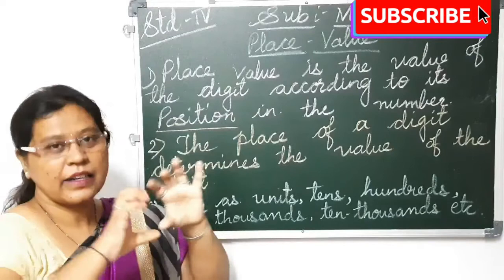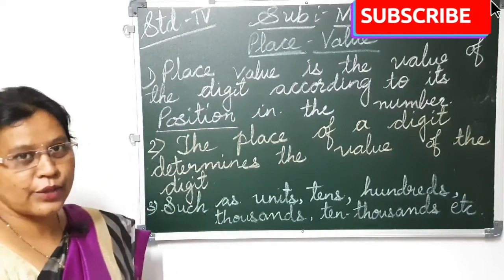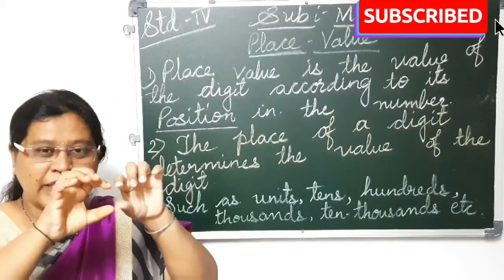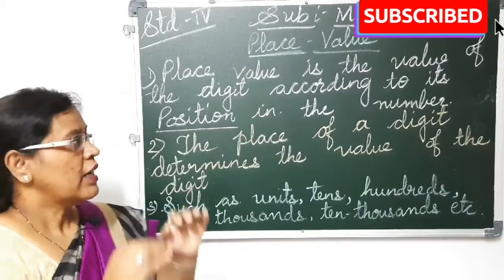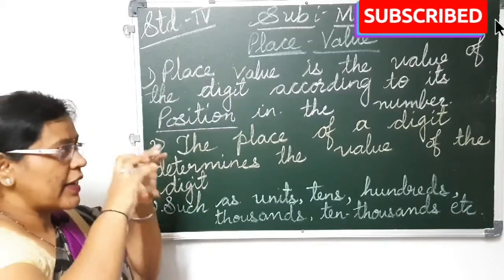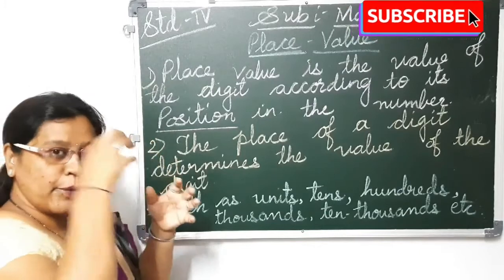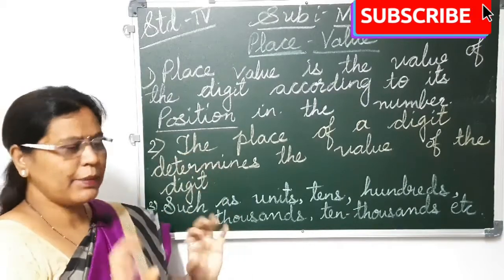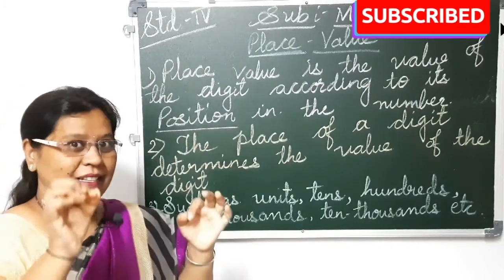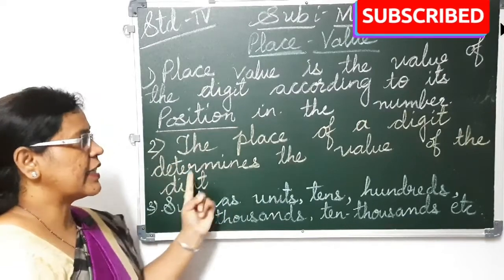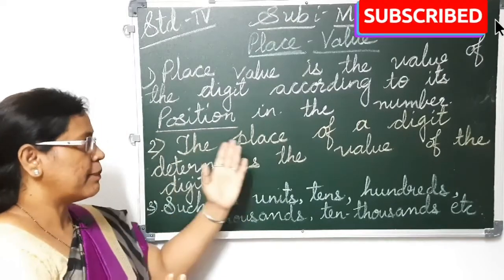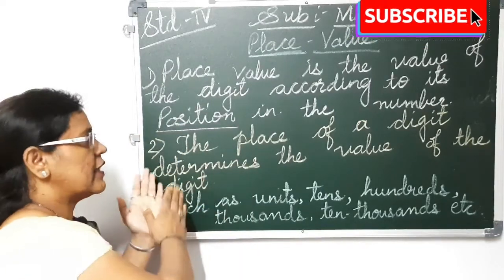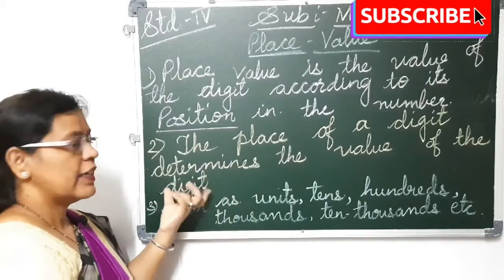The place value is the value of the digit according to its position. Position means place in the number. I told you in my previous video also that 0 to 9 are the digits, and by these digits we make a number. The digits in the number and the position of that digit is called the place value. In simple terms, the place of a digit determines its value.